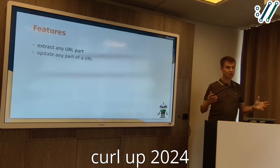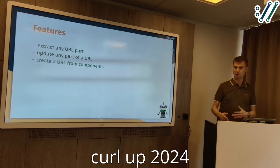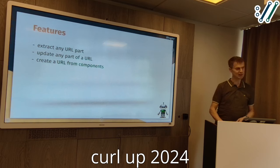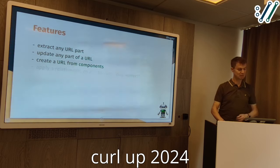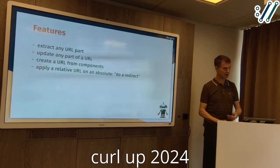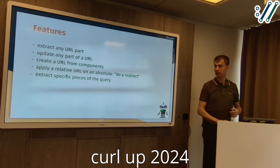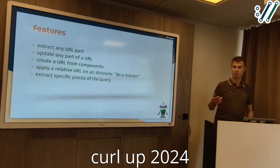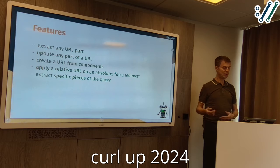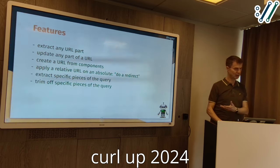You can use it to extract any part of a URL — there are basically 10 parts. Get any part out of the URL, update or set any part, and then create the URL out of those components. You can also apply a redirect: if you have a URL and go to a relative URL from the first one, where do you end up? A lot of people are doing things with the query part — to the right of the question mark — which is usually a set of key-value pairs. It has features to extract, set, or trim off parts from the query.